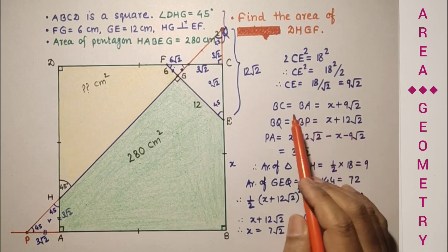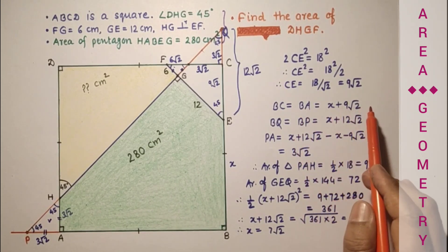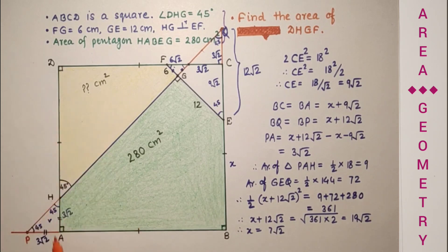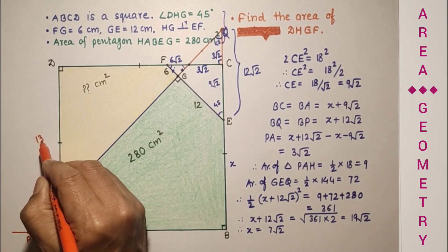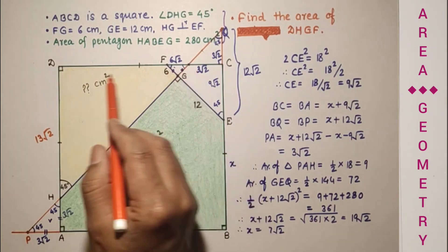Therefore BA is equal to 7 root 2 plus 9 root 2, which is 16 root 2. And that is DA. So DH is equal to 16 root 2 minus 3 root 2, which is 13 root 2. This will also be 13 root 2.